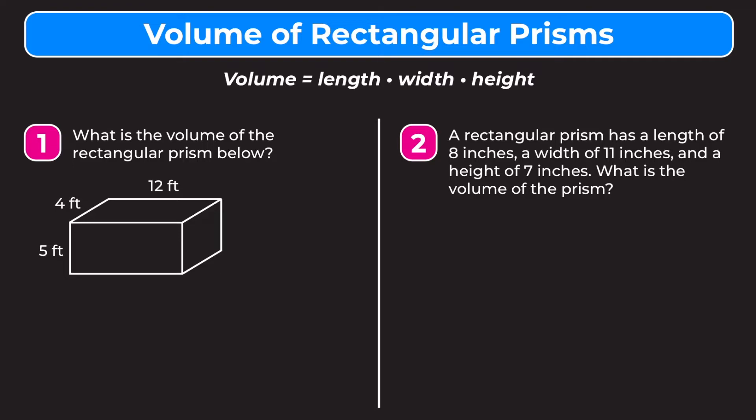So let's start with example number one. We have a rectangular prism here, it's drawn out and there are some numbers labeled on there. So our first step, let's rewrite this formula. So we have volume equals length times width times height, L times W times H.